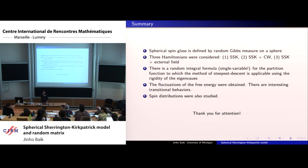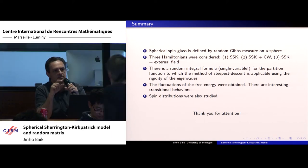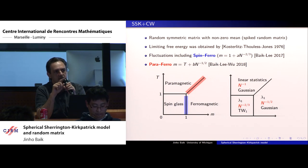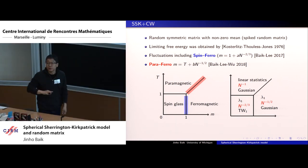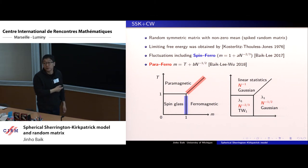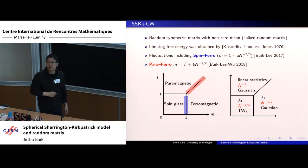Q&A: Regarding the phase diagram lines for the SSK+CW model, the free energy is continuous across them; this is a third-order phase transition, meaning the second derivative of the free energy is continuous but the third derivative is not.